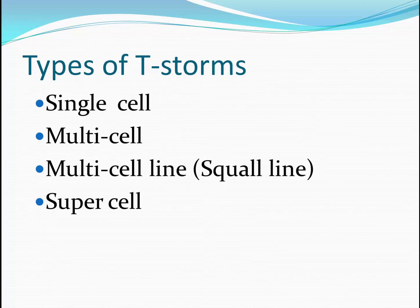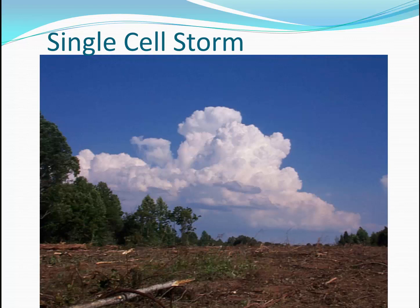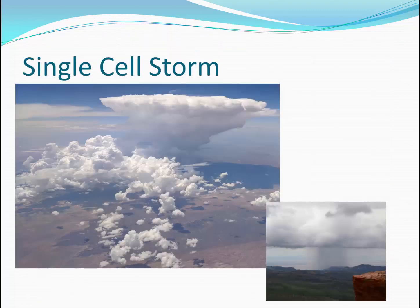There are four general types of thunderstorms: the single-cell, multi-cell, multi-cell line or squall line, and the supercell. The single-cell storm is probably the most common thunderstorm, especially for those of us in the southeastern United States. Sometimes referred to as air mass thunderstorms, these are the typical small afternoon thunderstorms. They tend to last 30 to 40 minutes. Here we see a small single storm from the perspective of an airplane over central New Mexico. The picture on the lower right shows a typical rain shower. Rain showers associated with cumulonimbus clouds are often very small and over fairly quickly.